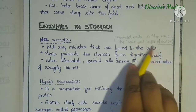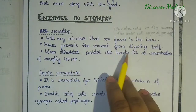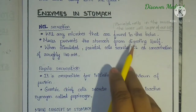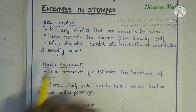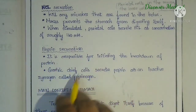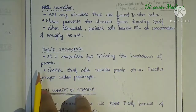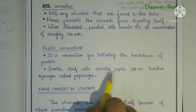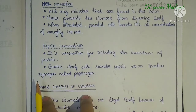The enzymes in the stomach include HCl and pepsin. HCl secretion kills any microbes found in the bolus. Mucus prevents the stomach from digesting itself. When stimulated, parietal cells secrete HCl at a concentration of roughly 160 mM.